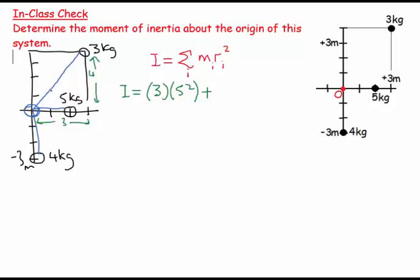So even though it wasn't directly given to me, it was relatively straightforward to work out what it was. If I look at the second mass, that's the five kilogram mass, this is a bit more straightforward, it's just two meters away, so this will be two squared. And then for this mass down here, I have the four kilogram mass and this would be three squared.